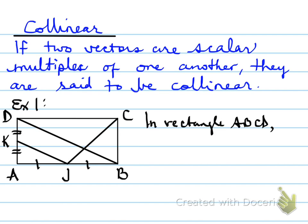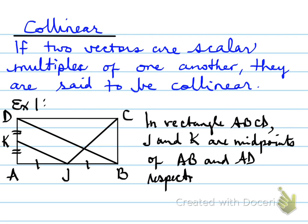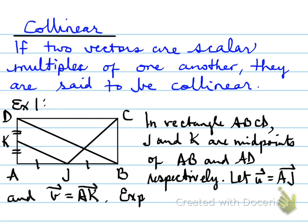An example is in rectangle ABCD, where J and K are midpoints of AB and AD respectively. We let vector u equal vector AJ, and vector v equal vector AK. You're to express each vector in terms of u and v.